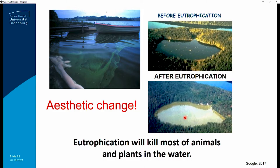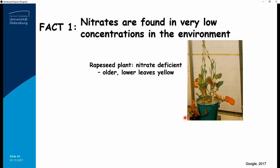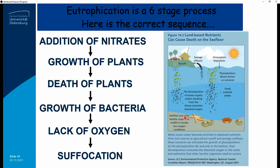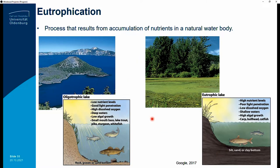When you have eutrophication you end up with high levels of nutrients, low light — so aquatic life just below the water surface that requires light to photosynthesize can no longer do so — and low dissolved oxygen.